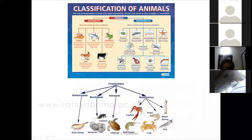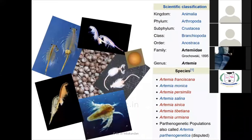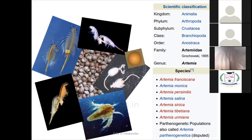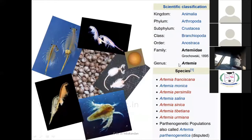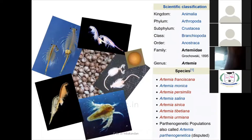The scientific classification of artemia shows it falls under the crustacean group, highly related to the shrimp family. It belongs to Kingdom Animalia, Phylum Arthropoda, Subphylum Crustacea, Class Branchiopoda, Order Anostraca, Family Artemiidae, and Genus Artemia. Depending on the different geographical distribution, artemia species include Artemia franciscana, Artemia monica, Artemia persimilis, Artemia salina, Artemia sinica, Artemia tibetiana, and Artemia urmiana.